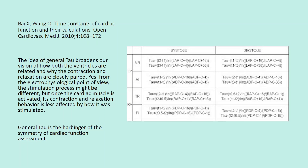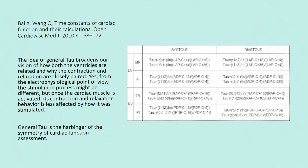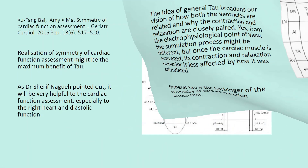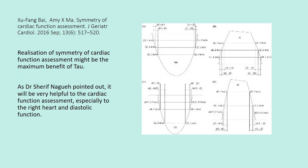From the electrophysiological point of view, the stimulation process might be different, but once the cardiac muscle is activated, its contraction and relaxation behavior is less affected by how it was stimulated. The idea of general tau broadens our vision of how both ventricles are related, and why contraction and relaxation are closely paired. General tau is the harbinger of the symmetry of cardiac function assessment.